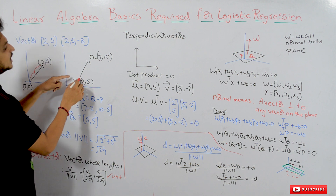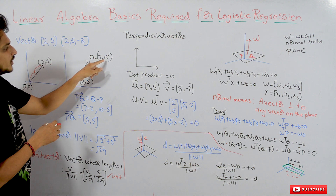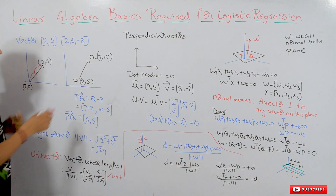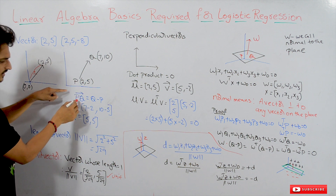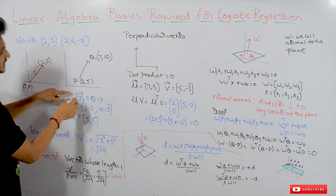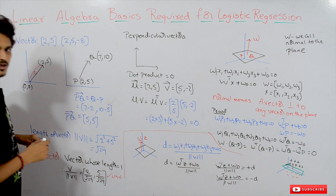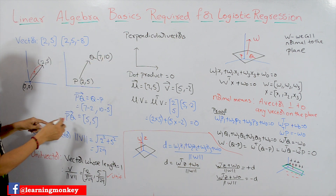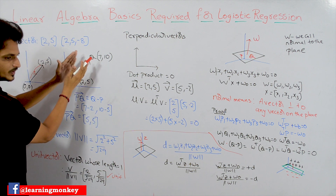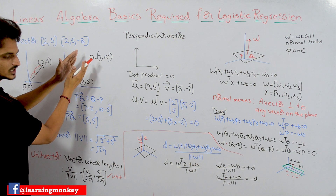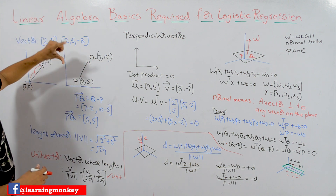Let's take an example. PQ is a vector whose starting point P is (2,5) and ending point Q is (7,10). The vector PQ — denoted PQ with a bar — is given by Q minus P, meaning ending point minus starting point: (7-2, 10-5) = (5,5). So vector PQ equals (5,5). This is how we calculate a vector when two points are given.